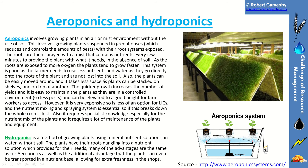A different, more modern method of watering plants is by using aeroponics and hydroponics. You can see an aeroponic system and a hydroponic system here. Aeroponics is where you spray a fine mist of water over plants that are grown without the use of soil. It involves growing plants suspended in greenhouses with their root systems exposed, and the roots are sprayed with a nutrient-rich mist. This is efficient as the nutrients and water go directly onto the roots and are not lost into the soil.